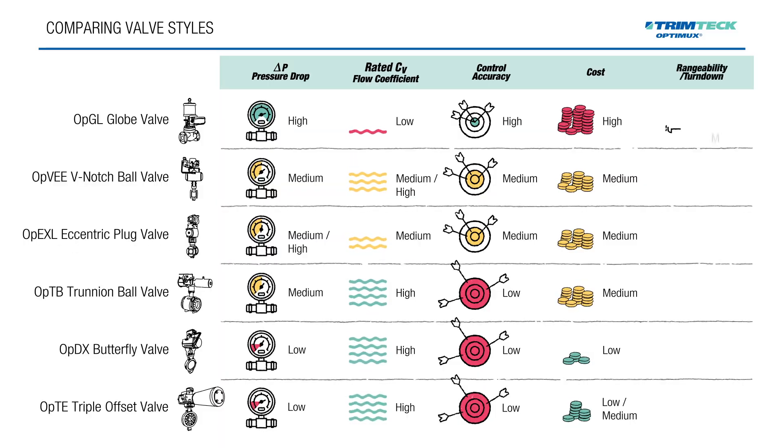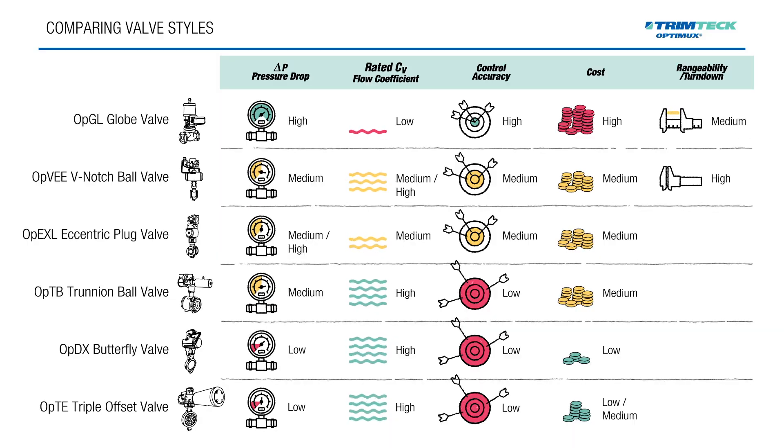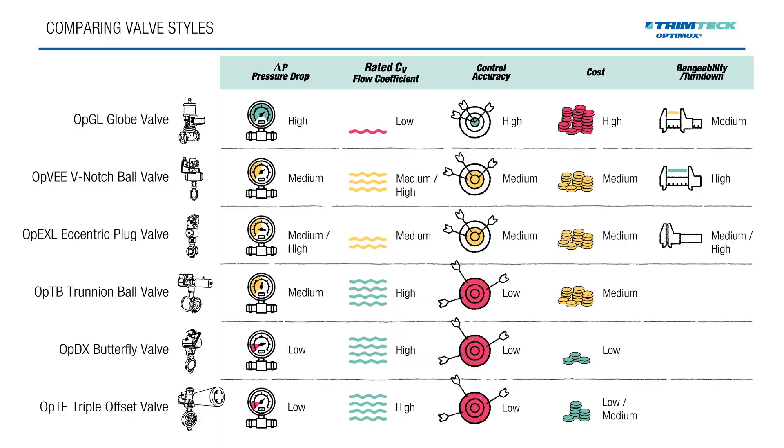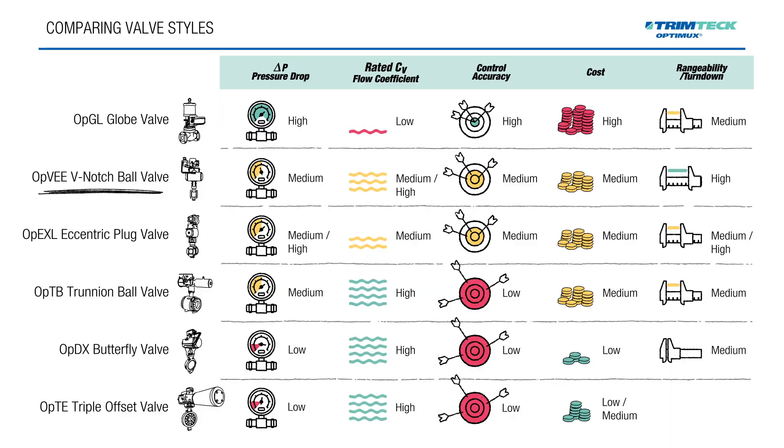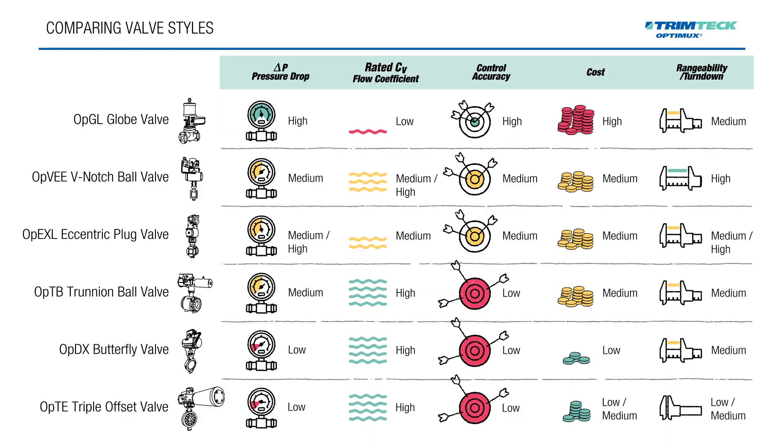Rangeability, or turndown ratio, describes how well a valve can control flow across a wide range. In this category, the V-notch or segmented ball valve leads the pack with a turndown ratio of 300 to 1. Eccentric plug valves also perform well, often delivering 100 to 1 or better. Globe valves typically offer 50 to 1, while trunnion ball and butterfly valves tend to be more limited, closer to 10 to 1 or 20 to 1.